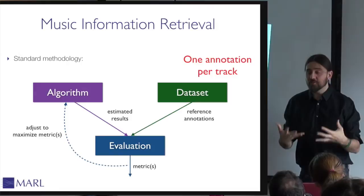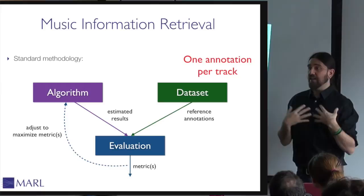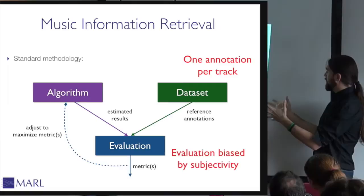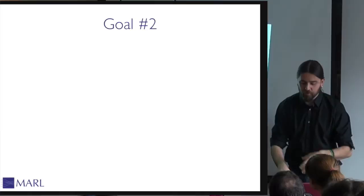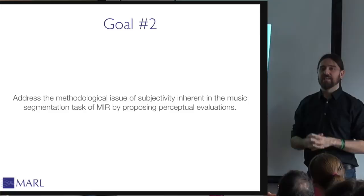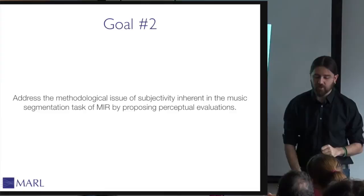If, as I mentioned, your answer might be different than mine for music structure, your answer is still as valid as mine. So there is a problem with subjective tasks such as music structure: if there is only one annotation per track, the evaluation is going to be biased by subjectivity. Goal number two is therefore to address the methodological issue of subjectivity inherent in the music segmentation task of MIR by proposing perceptual evaluations. These are the two main goals of my dissertation, and I'll start with the first — the automatic approaches.